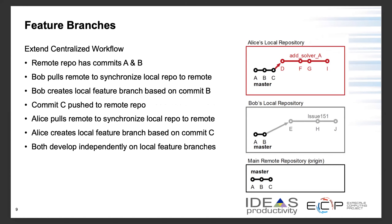A feature branch is created specifically for adding a feature to your code. When that feature is completed, the branch is merged with master and then deleted. You can also create feature branches for fixing bugs. For example, Alice creates a local feature branch called AdSolver and Bob creates one called Issue 151. Both branches are created from master, but at different commits — Alice from commit C, Bob from commit B.